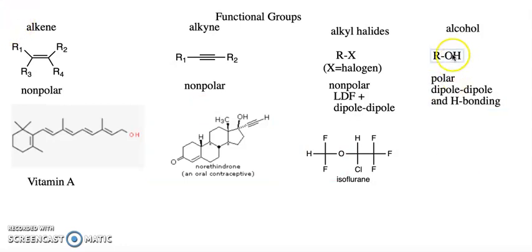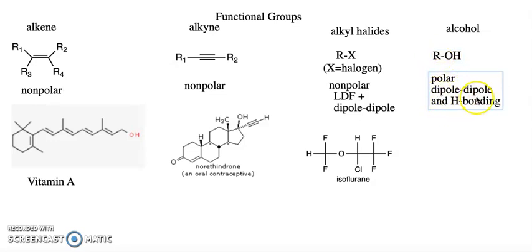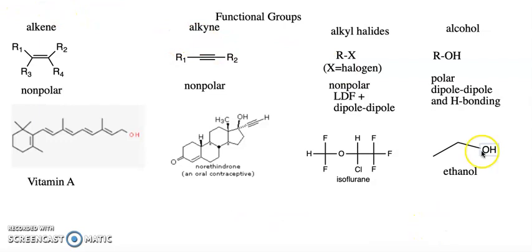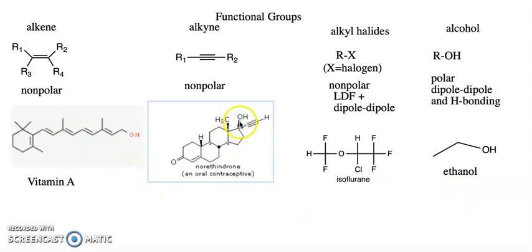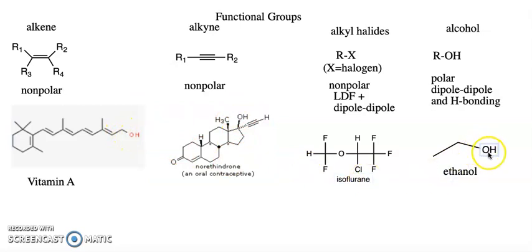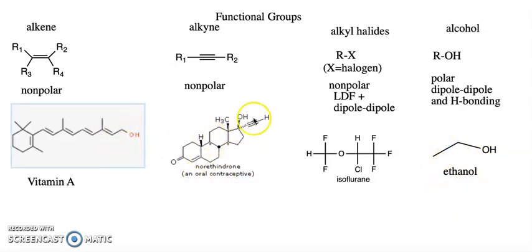Next I want to talk about the alcohol functional group, which has the general formula ROH. This is a polar functional group — it makes polar molecules depending on what R is — and it has dipole-dipole and hydrogen bonding interactions on the OH group. A simple example is ethanol, though OH is a fairly common functional group that can have very simple or very complicated R groups.